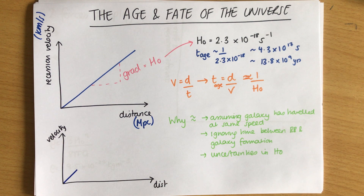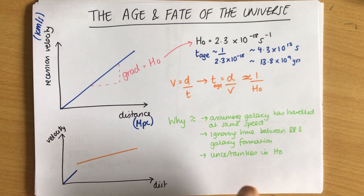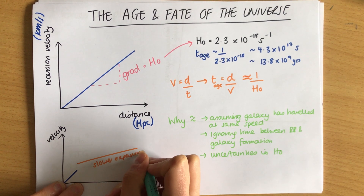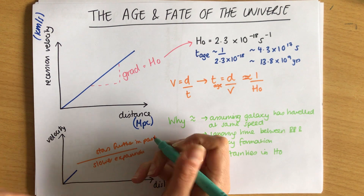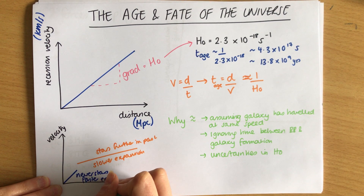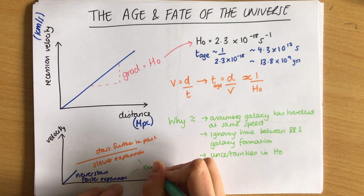With modern technology, using supernovae, we can see much further away galaxies that existed billions of years ago. If we plot data from these more distant, older galaxies, the line of best fit has a different slope - indicating slower expansion in the past. Comparing that to nearer, more recent galaxies, which show faster expansion, we can see that the expansion of the universe is accelerating.